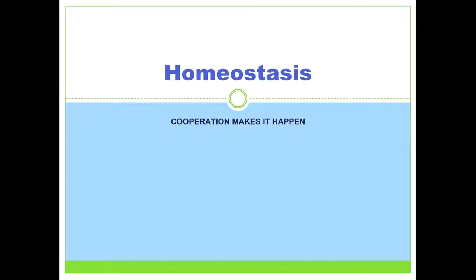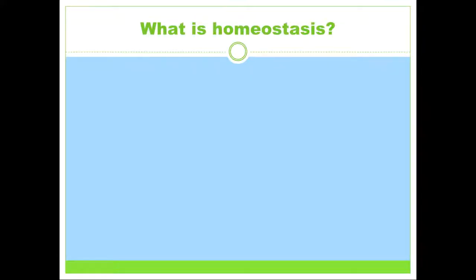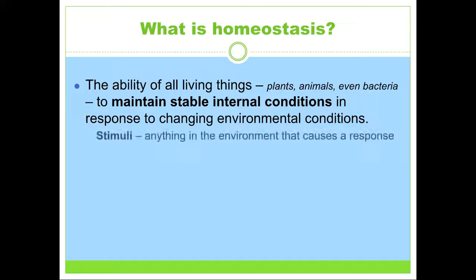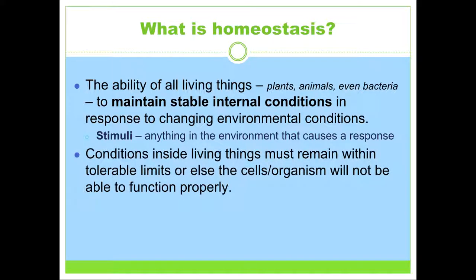Notice that it says cooperation makes it happen. We're going to look at how the organs work together to keep us healthy. So just a quick review — what is homeostasis? This is the ability of every single living thing, even bacteria, to maintain the same internal conditions. There are plenty of stimuli in the environment that can cause a response. It's important to maintain homeostasis so that we remain within our tolerable limits; otherwise we can't function properly, and that's when we get sick or develop disease, even chronic disease.